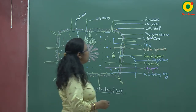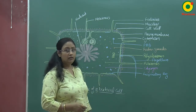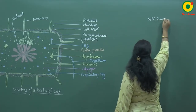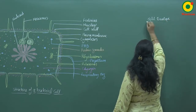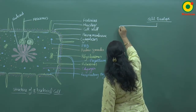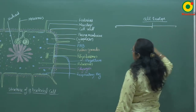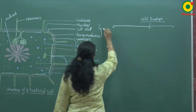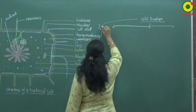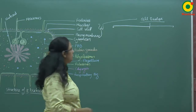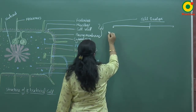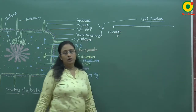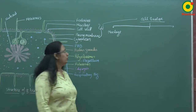The cell envelope is basically made up of three parts: first is mucilage, also known as glycocalyx; second is cell wall; and the innermost layer is the plasma membrane. Together, the cell envelope is the outermost layer of the bacterial cell made up of these three layers.